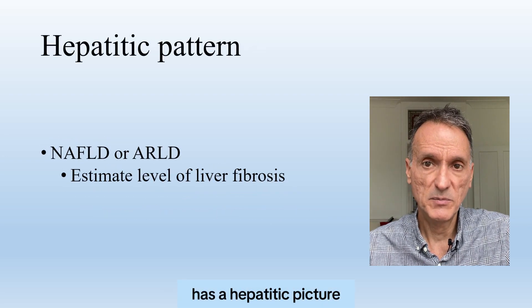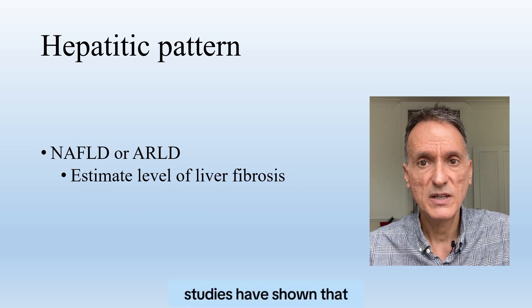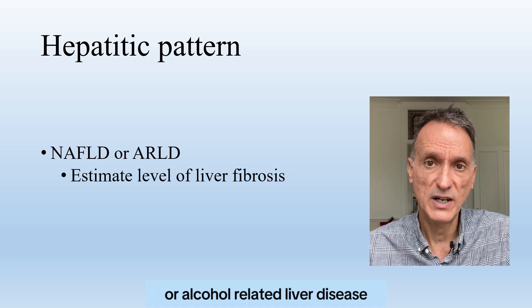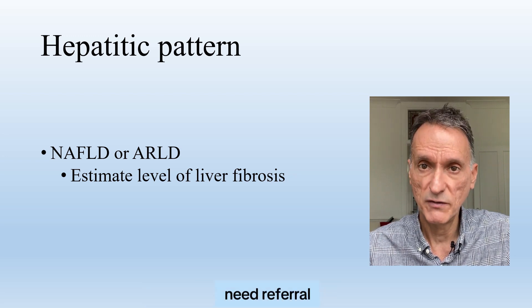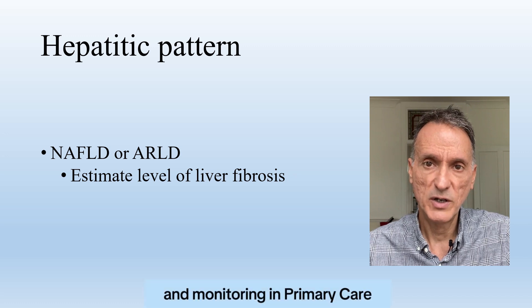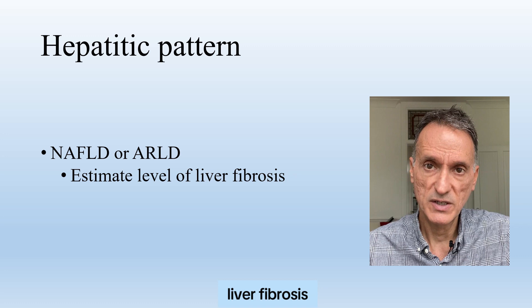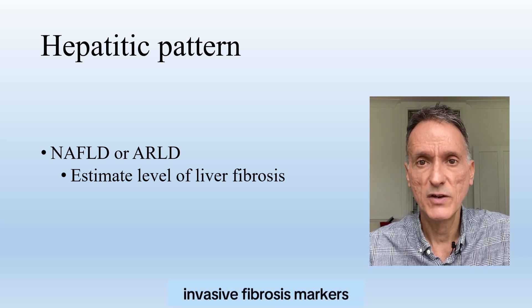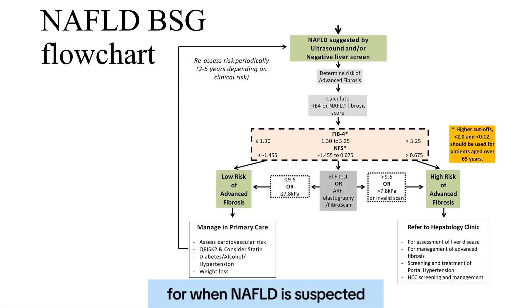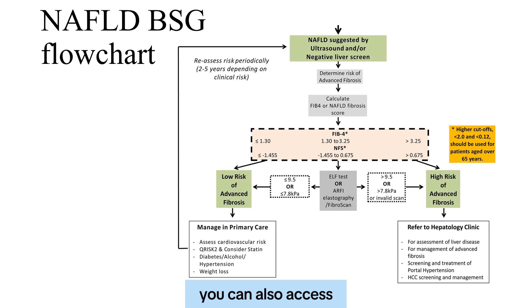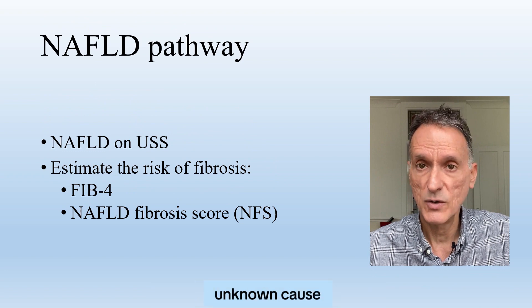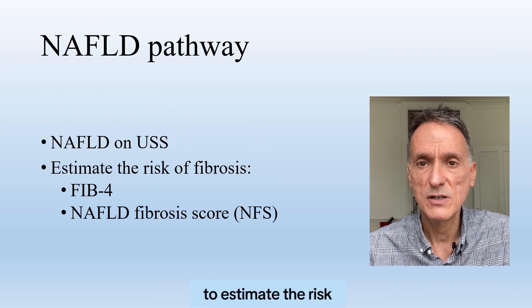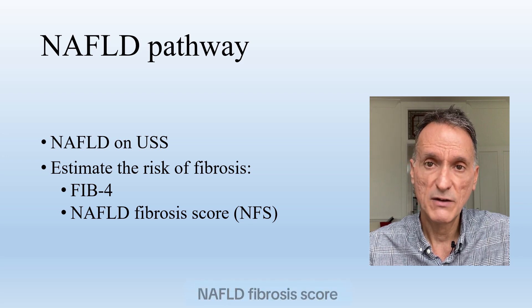If the patient has a hepatitic picture with a high ALT and AST, studies have shown that the majority will have NAFLD or alcohol-related liver disease and most will not need referral, but lifestyle advice and monitoring in primary care. The deciding factor is the level of liver fibrosis, which we can estimate using non-invasive fibrosis markers. The British Society of Gastroenterology has also produced a specific flowchart for when NAFLD is suspected following a liver ultrasound scan. In summary, it says that for patients with NAFLD or liver disease of unknown cause, the next step is to estimate the risk of fibrosis using the FIB-4 or NAFLD fibrosis score.